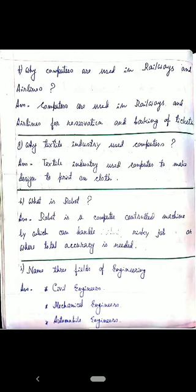Question S: What is a robot? Answer: A robot is a computer-controlled machine which can handle tasks where high accuracy is needed.